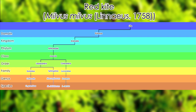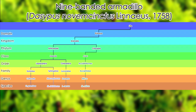Next is the red kite, Milvus milvus (Linnaeus, 1758). Domain Eukaryota, Kingdom Animalia, Phylum Chordata, Class Aves, Order Accipitriformes, Family Accipitridae, Genus Milvus, and Species M. milvus. Next is the nine-banded armadillo, Dasypus novemcinctus (Linnaeus, 1758). Domain Eukaryota, Kingdom Animalia, Phylum Chordata, Class Mammalia, Order Cingulata, Family Dasypodidae, Genus Dasypus, and Species D. novemcinctus.